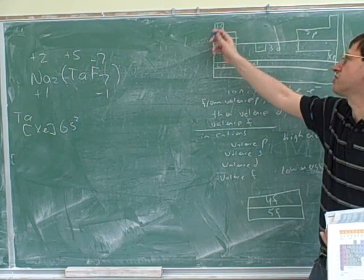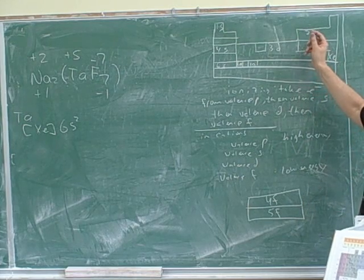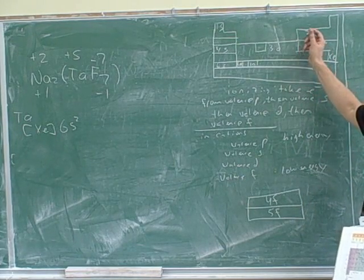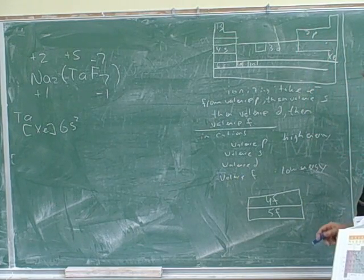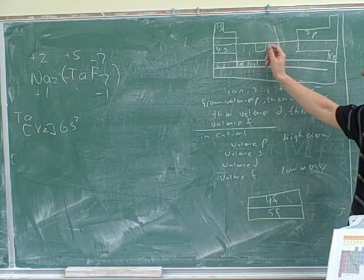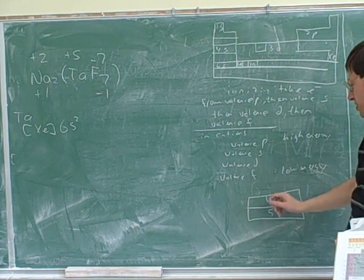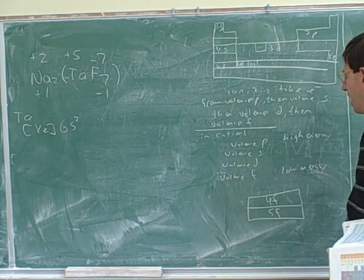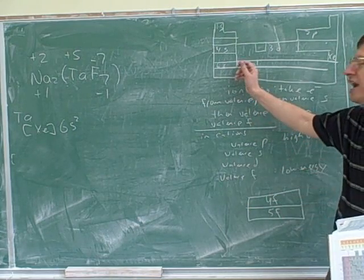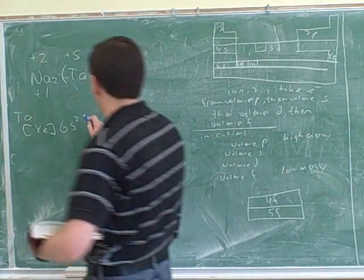So each more advanced subshell, so to speak, starts in a higher principal quantum number as well. That might help us to remember that. The first subshell, S, starts with the first principal quantum number. But the next subshell, P, doesn't start until the second principal quantum number. The third type of subshell, D, doesn't start until the third quantum number. And this fourth type doesn't start until the fourth quantum number. So this is 4F and this is 5F. But we're not all the way down here. We're only in 4F because this is the first time we ever used the F block. 5F would be if we were here. So that's 4F.